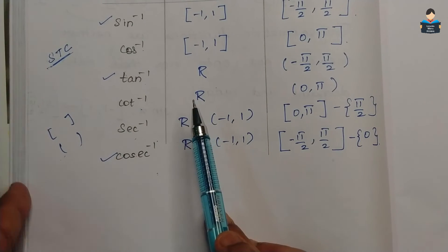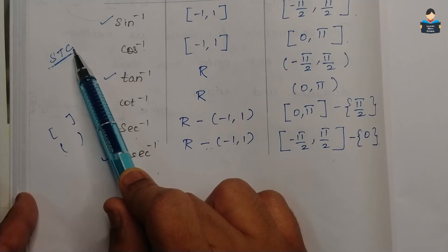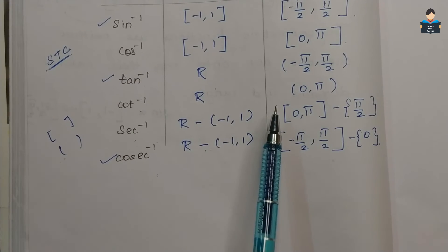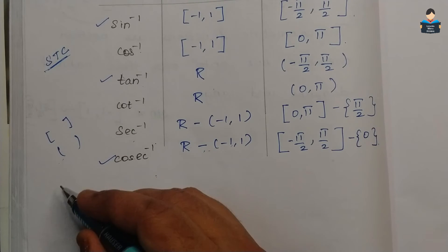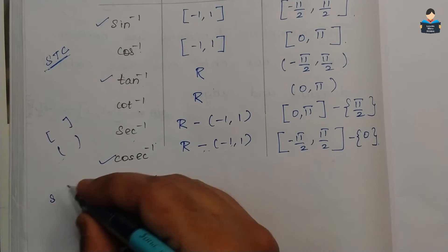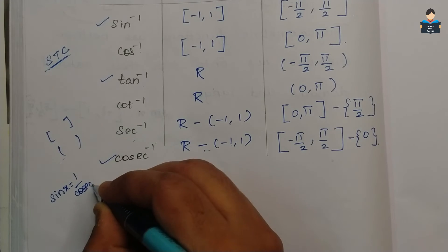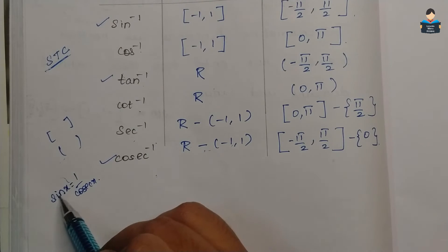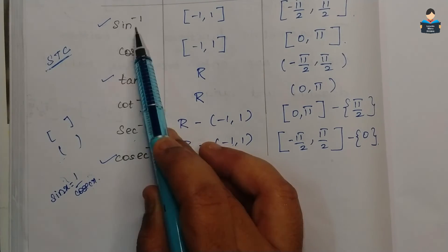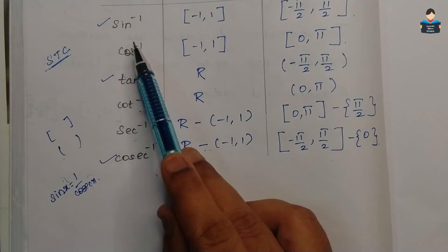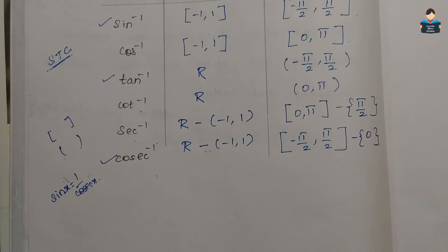In the first set — sin inverse, cosec inverse together; cos inverse, secant inverse together — this is because sin x equals 1 by cosec x, which we learned in tenth standard. So sin inverse and cosec inverse are one pair, cos inverse and secant inverse are one pair, and tan inverse and cot inverse are one pair. Now the domain is clear; next let us look at the range.